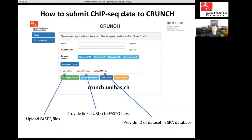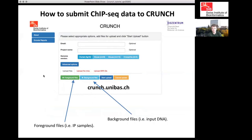Or if your data is in the Sequence Read Archive, you can simply provide the IDs of the datasets and CRUNCH will fetch it. CRUNCH would like to get both a foreground and background file, where foreground files are IP samples and the background files are input DNA. By clicking on these buttons, you can upload both the IP samples and the input DNA, and this works similarly with the links where you give separately links to the IP samples and to the background samples.